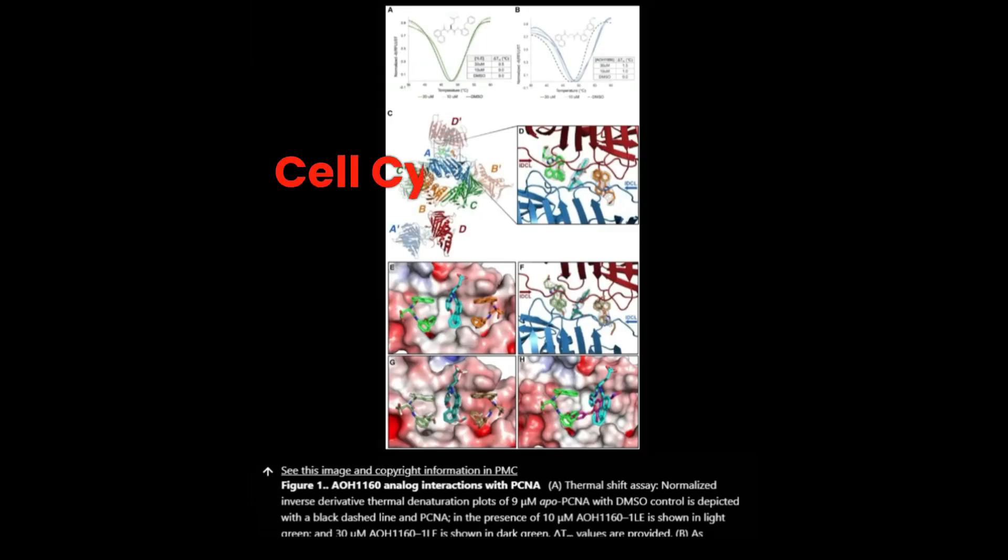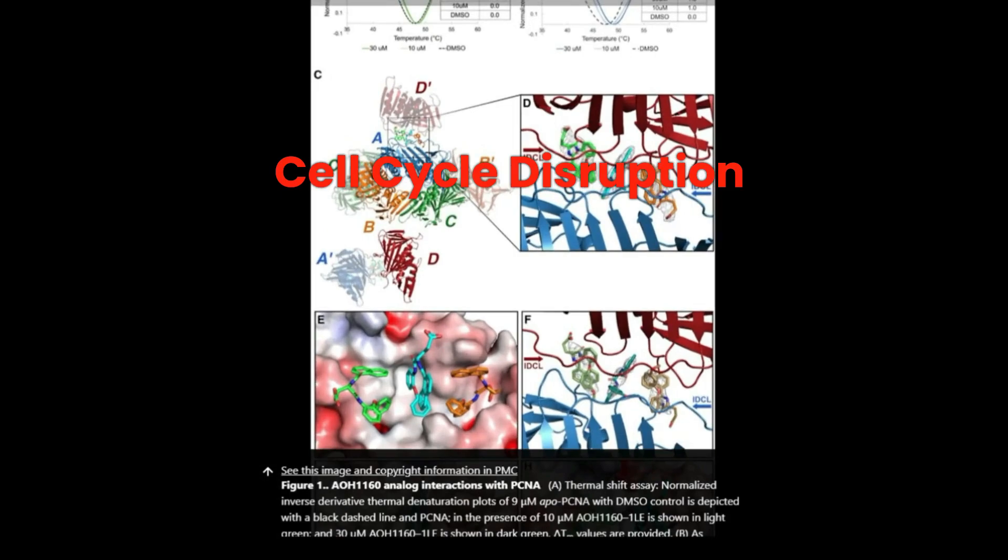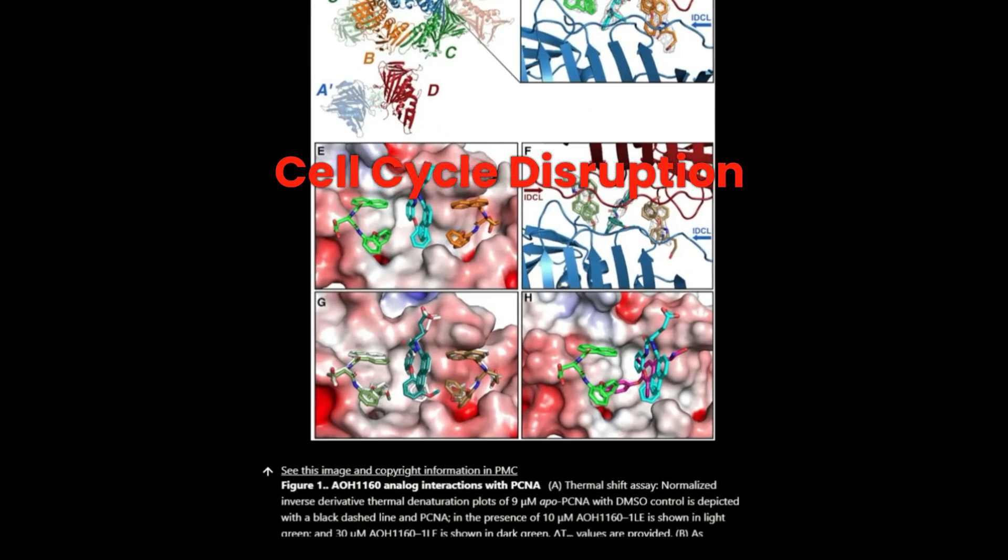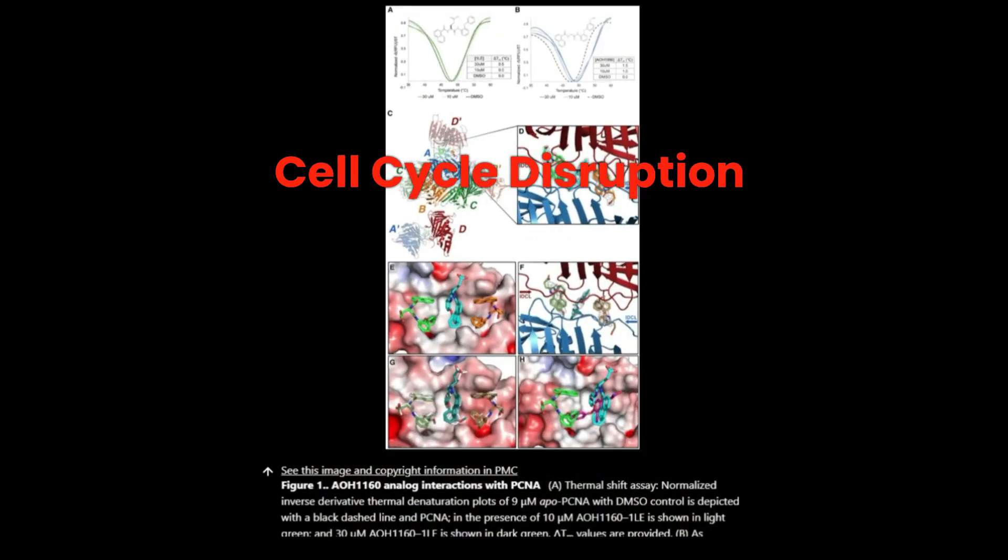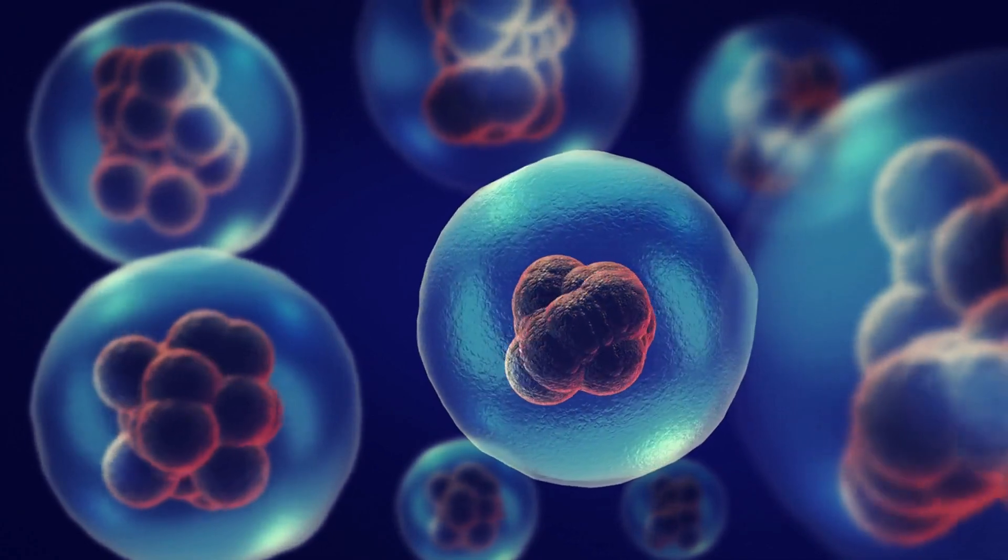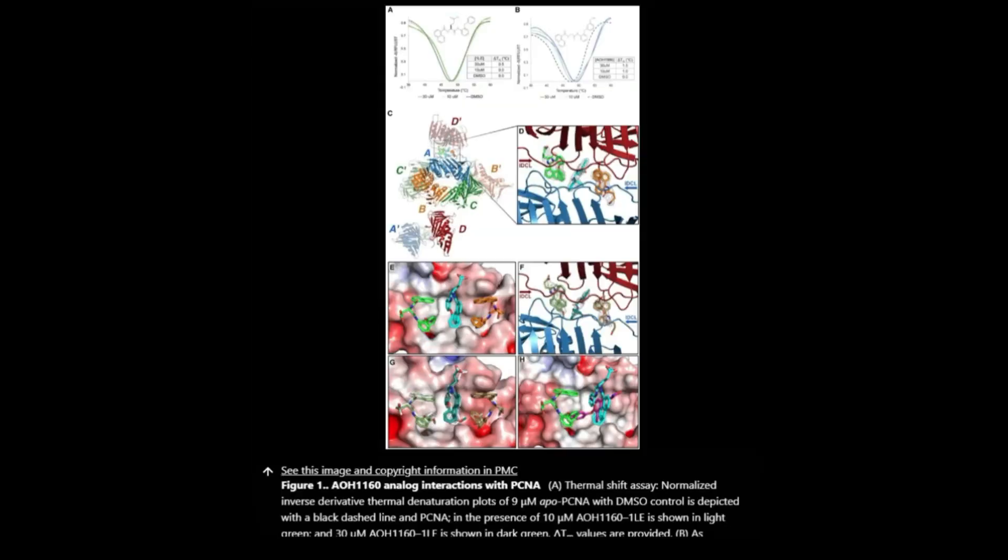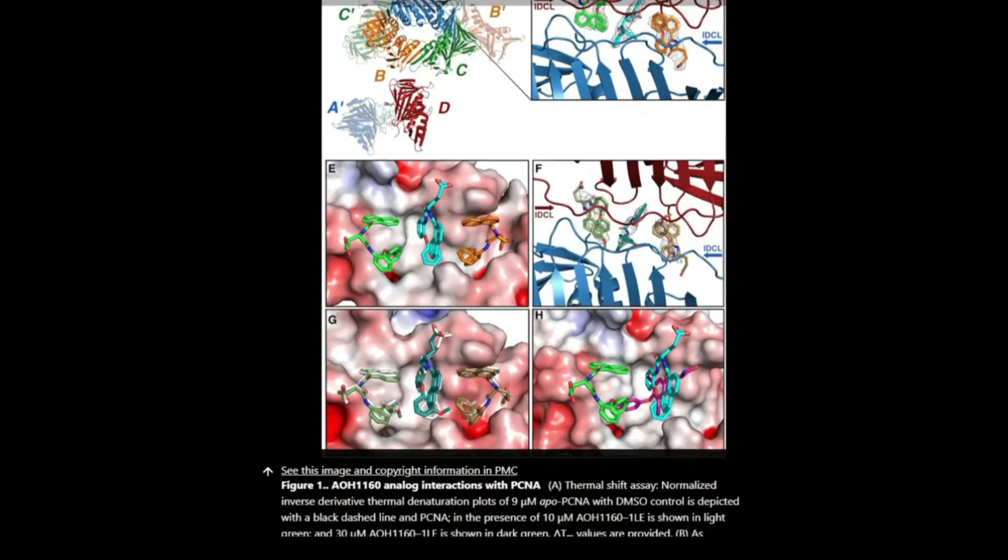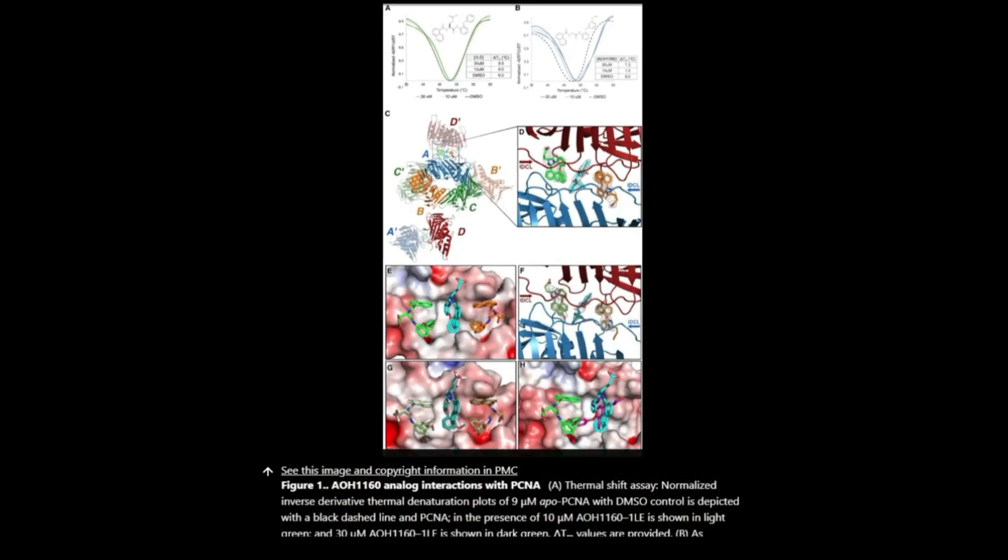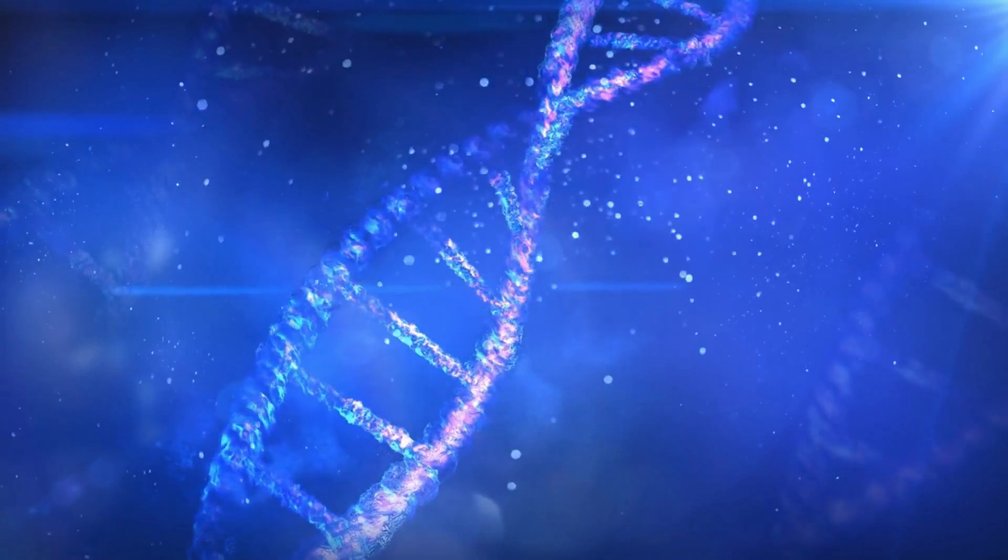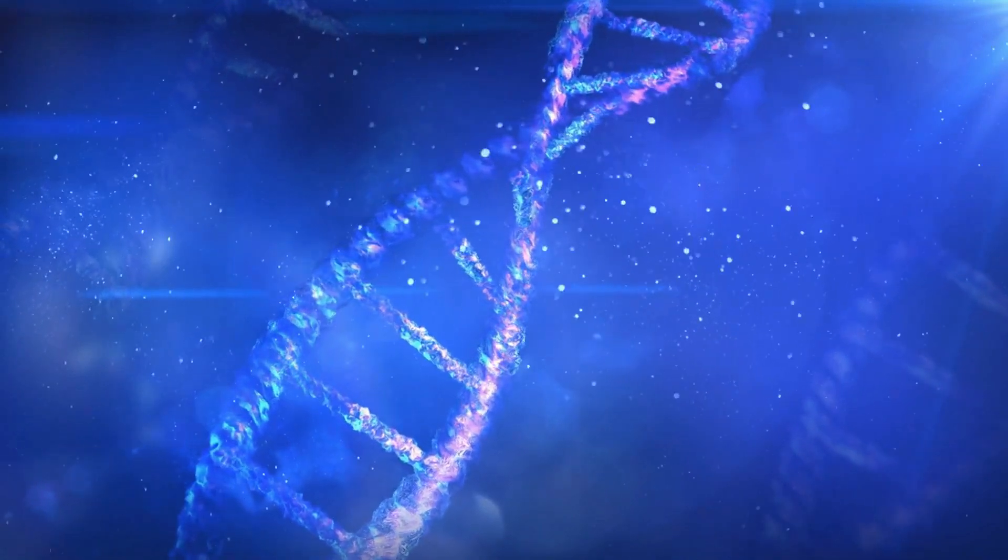Cell cycle disruption. We begin with the fundamentals of cell division and the pivotal role of PCNA in DNA replication. Image 1 reveals the impact of AOH 1996 on cell cycle progression through PI staining, a classic measure of DNA content in cells using flow cytometry. Notice the accumulation of cells in the sub-G1 phase, indicative of DNA fragmentation and apoptosis.